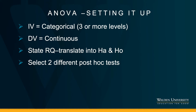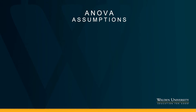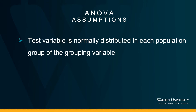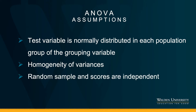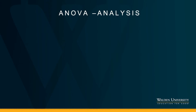Like any test, an ANOVA has assumptions that we will briefly review. The test variable — which is the dependent variable — is supposed to be normally distributed in each population group of the grouping variable. If you really want to test that, you could run a histogram on each separate level of that independent variable and you would have to have normally distributed histograms. We also have to assess the outcome of Levene's test, and we trust that the researcher sampled this data set randomly and that the scores are independent — in other words, the participants of the groups did not share their answers before measurement.